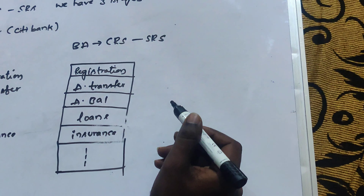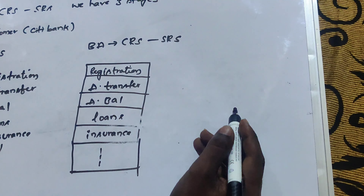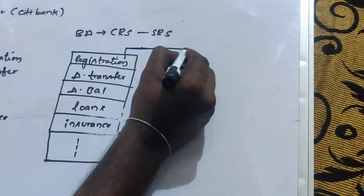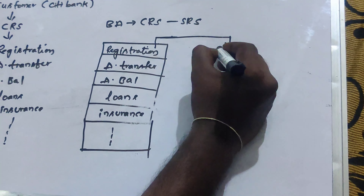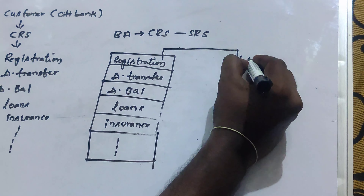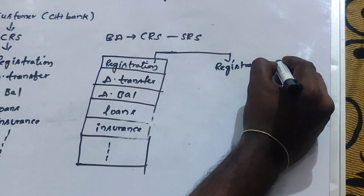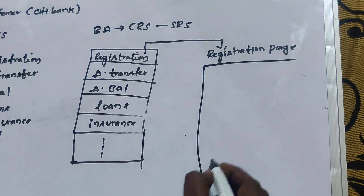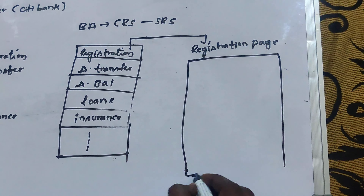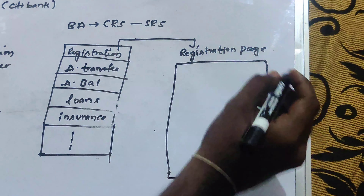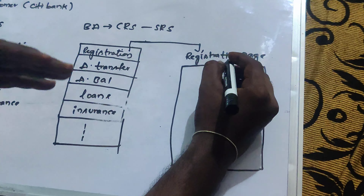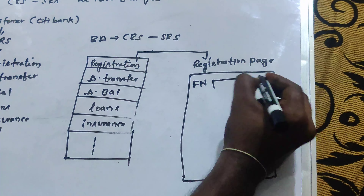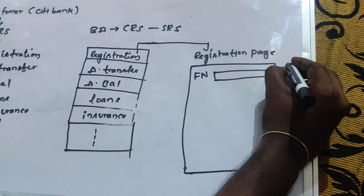By clicking on the registration feature — if any end user clicks on the registration page, it should open the registration page. The BA is going to explain that the registration page should contain a first name text field. Here, 'text field' is a software language term.